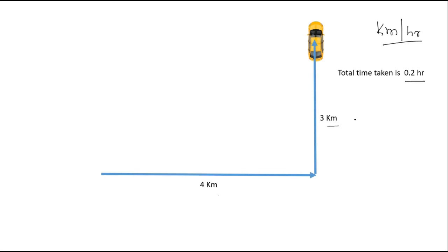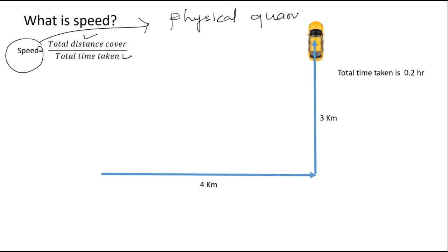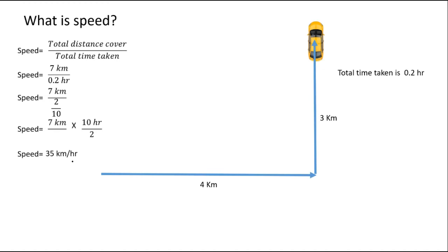Speed is a physical quantity which can be expressed as total distance covered divided by total time taken. The total distance is 4 plus 3 equals 7 km, divided by 0.2 hours, which gives us 35 km per hour. Please take a pause of this video and go through the calculations. The speed is 35 km per hour.